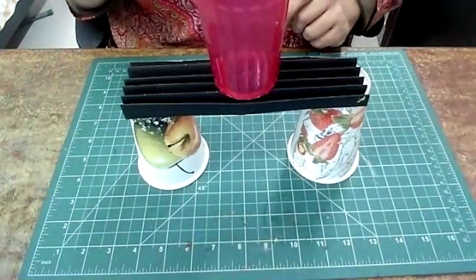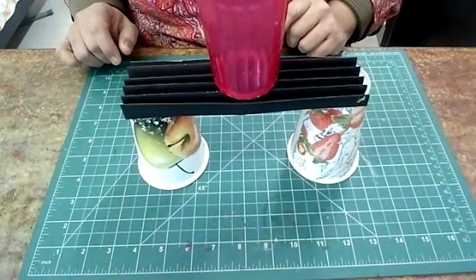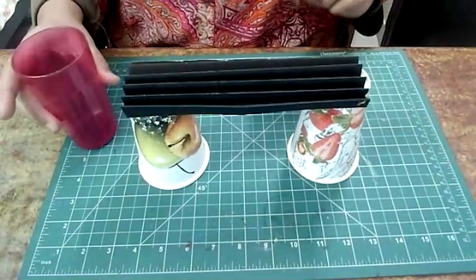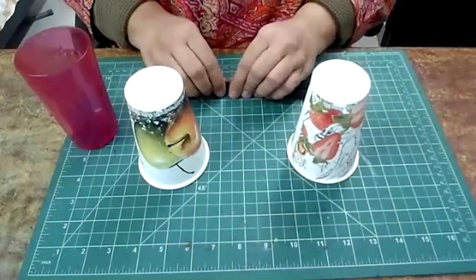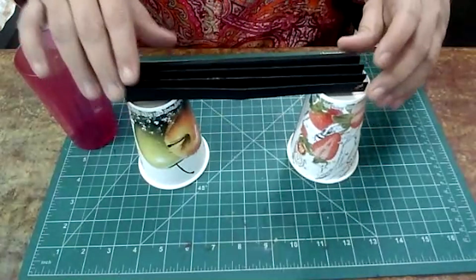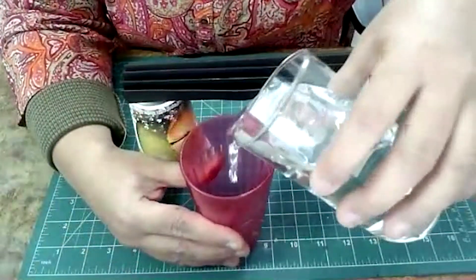You can see that paper has taken the weight of the glass. Now let us just add some water to it. Okay, I am again folding it nicely and I am placing it. I will add some water in my glass.